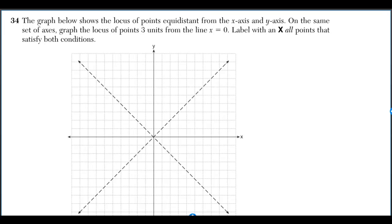The graph below shows the locus of points equidistant from the x-axis and y-axis. On the same set of axes, graph the locus of points three units from the line x is equal to zero. Label with an x all points that satisfy both conditions.